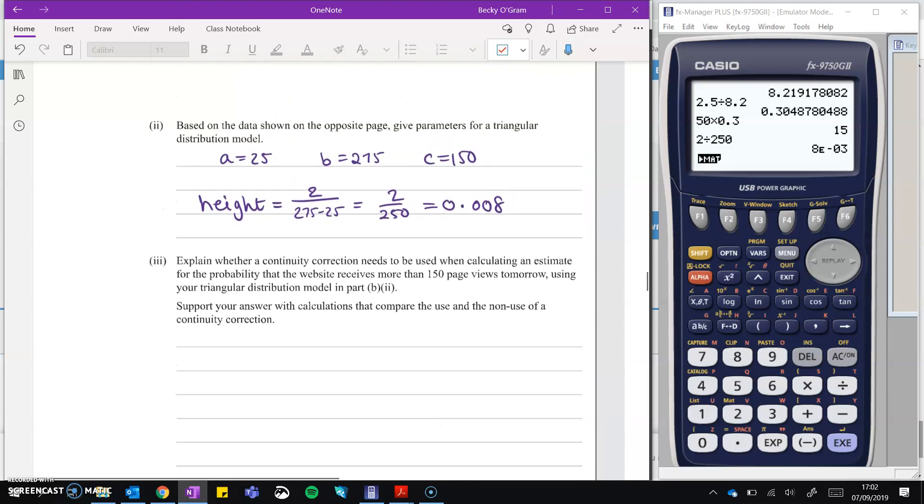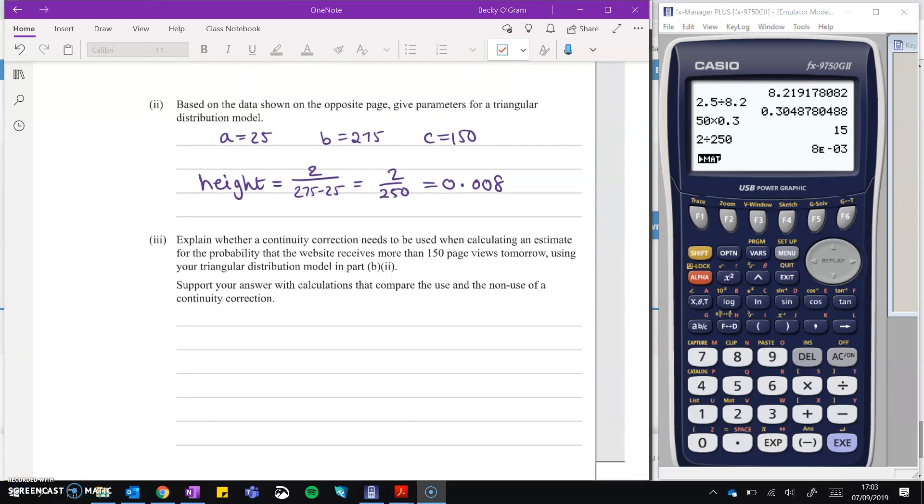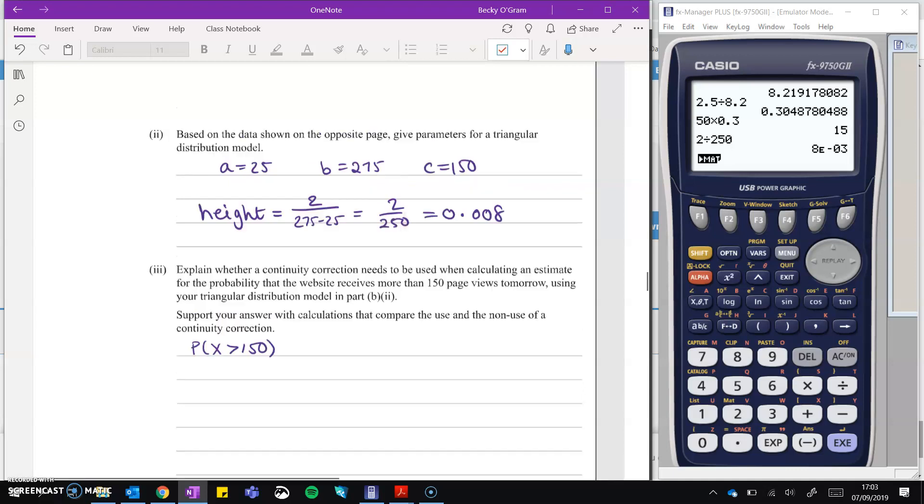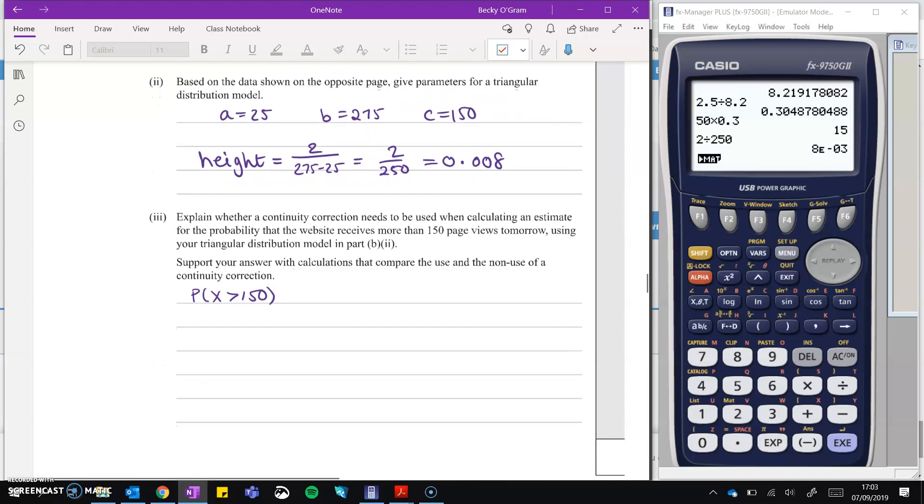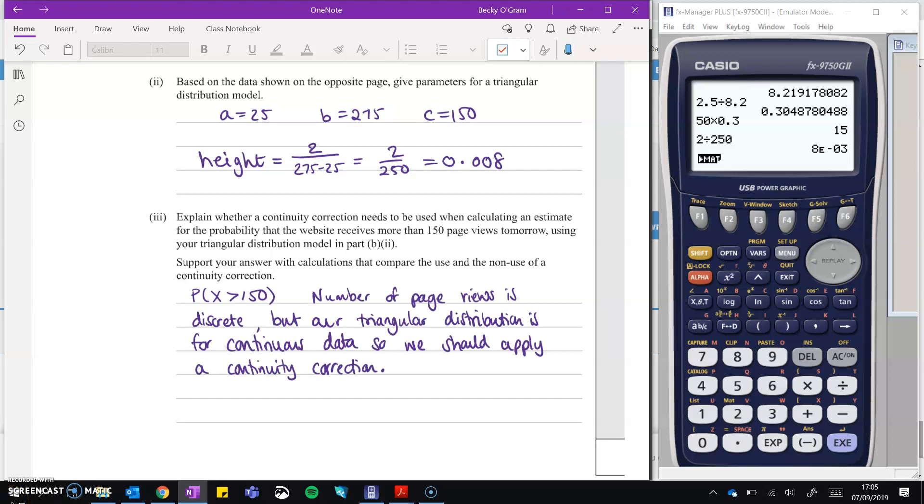Now let's move on to the next bit. So explain whether continuity correction needs to be used. Just pause and have a think about this question first. So we are specifically being asked to work out the probability if X receives more than 150 page views, does it need a continuity correction? So 150 is going from something countable. So it's counting how many page views and the model that we have just set up, the triangular one is a continuous one. So usually when you go from discrete to continuous, you do need to apply a continuity correction. So we'll write that in first. But then support your answer with calculations.